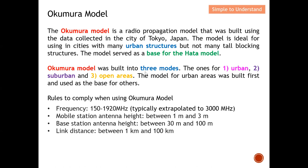The Okumura model is built into three modes. The first mode is urban — urban structure with not many tall buildings. The second is suburban — still considered urban but with fewer buildings. The third is open area — like plantation areas, categorized by a large open space. The model for urban area was built first and then used as a base for the others.